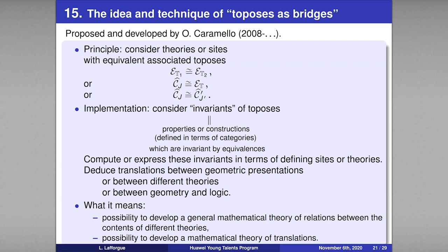This opens the possibility to develop a general mathematical theory of relations between the contents of different theories — a mathematical theory of translations. In mathematics, most results are relations or equivalences between two theories, two ways of computing. An equation is an equality between two things defined in different ways. The duality of sites and theories on one hand, and toposes on the other, opens the possibility to study this mathematically.